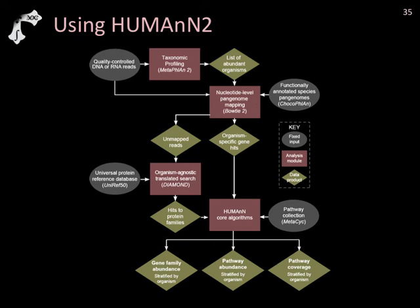An important question: does HUMAnN2 assume host reads are already removed? Yes — you would have to pre-screen your reads not just for quality but also for contamination beforehand. In the tutorial you'll actually do that, typically using Bowtie2 or BWA to map against the human genome. There's also a combined human and PhiX reference often used. If you're doing mouse or other organisms, you'd need to remove those reads first.